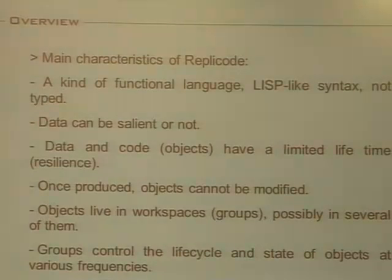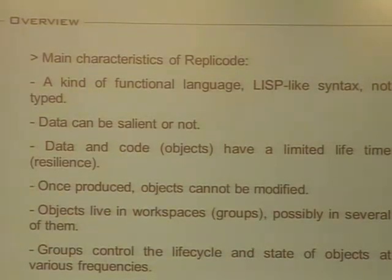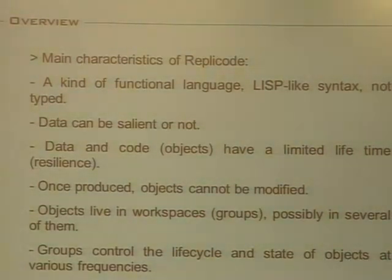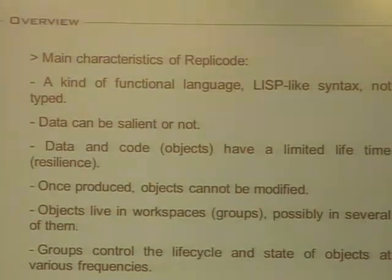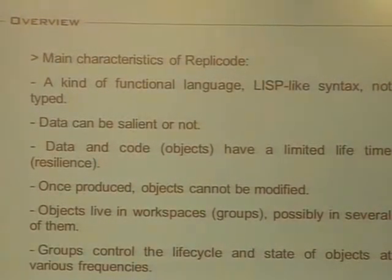It's a kind of functional language — it looks like this, but don't look too close. We know that code can be activated or not, and inputs can be salient or not. For an input to be processed by a piece of code, it must be salient enough, and the piece of code must be active enough. There is no on-the-fly modification of data or code once produced. An object can be changed, but it has a limited lifespan. All those objects live in groups — workspaces used to segment or partition the knowledge found in the system.